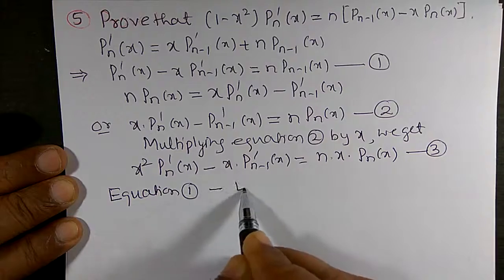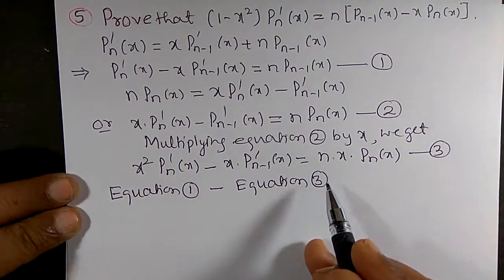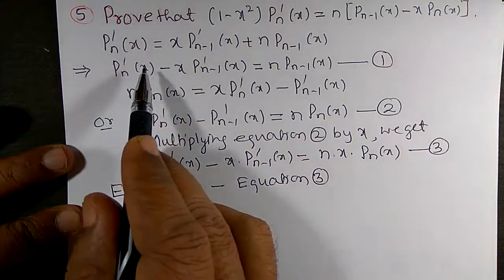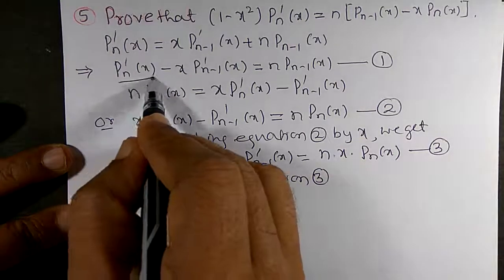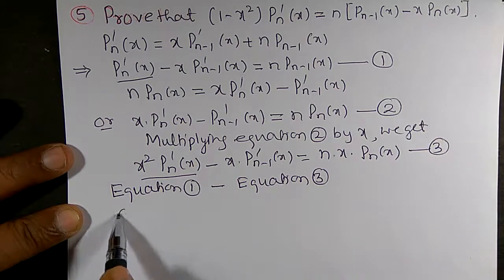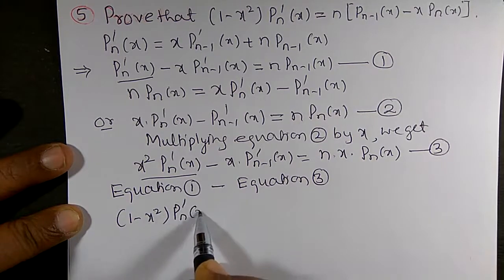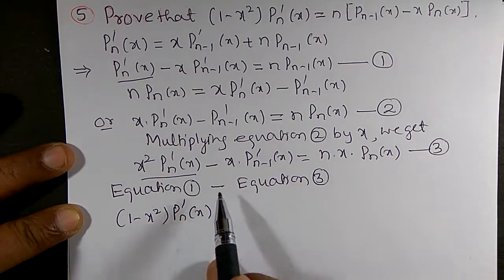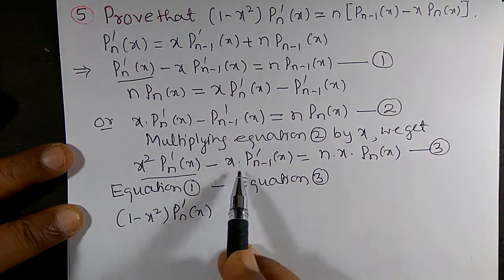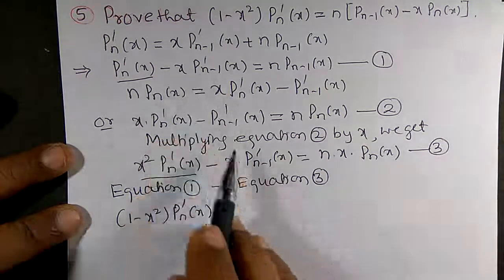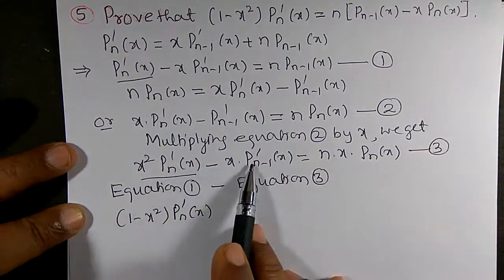Now computing Equation 1 minus Equation 3: from Equation 1 we have P'ₙ(x), and subtracting Equation 3 gives (1 - x²) · P'ₙ(x). The x · P'ₙ₋₁(x) terms appear with opposite signs in Equations 1 and 3, so these two terms cancel.